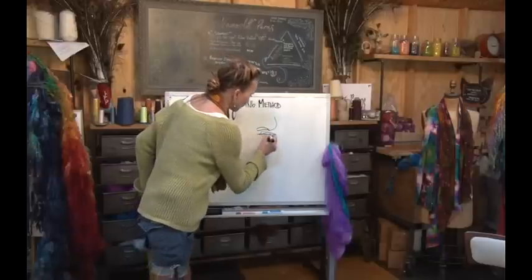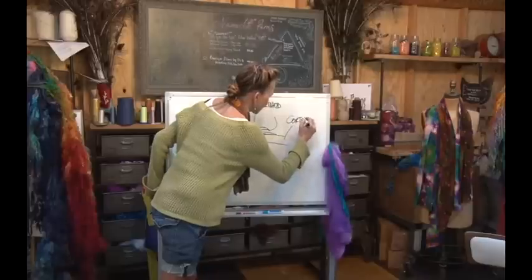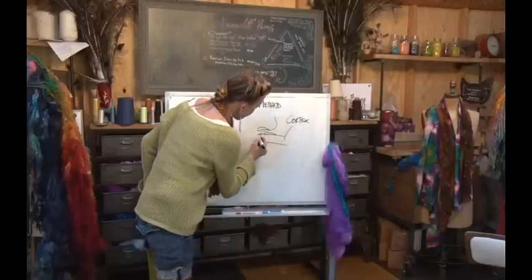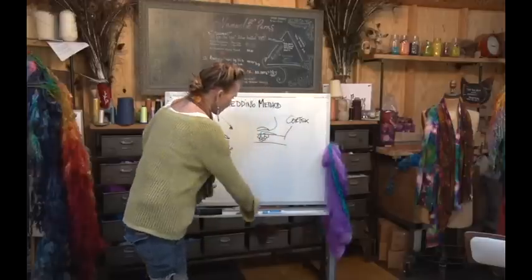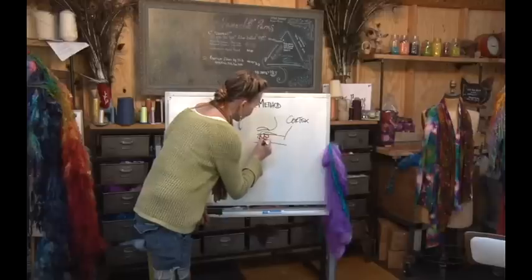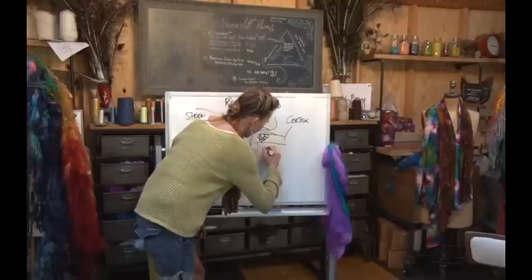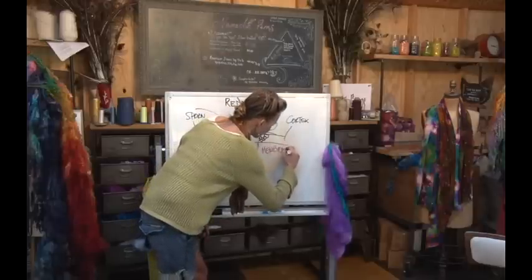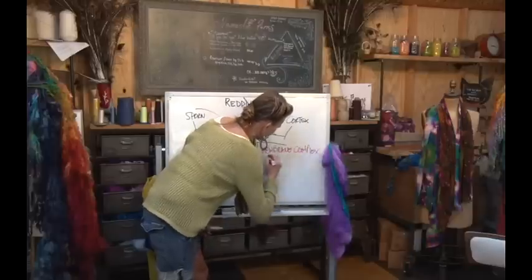So then what they found, here's the cortex. Scales are on top of the cortex, right? And then here's cortical cells. And they found that around these cortical cells is something that's a continuous layer. It goes around all of them. It's protective. And it's called the cell membrane complex, or the CMC.